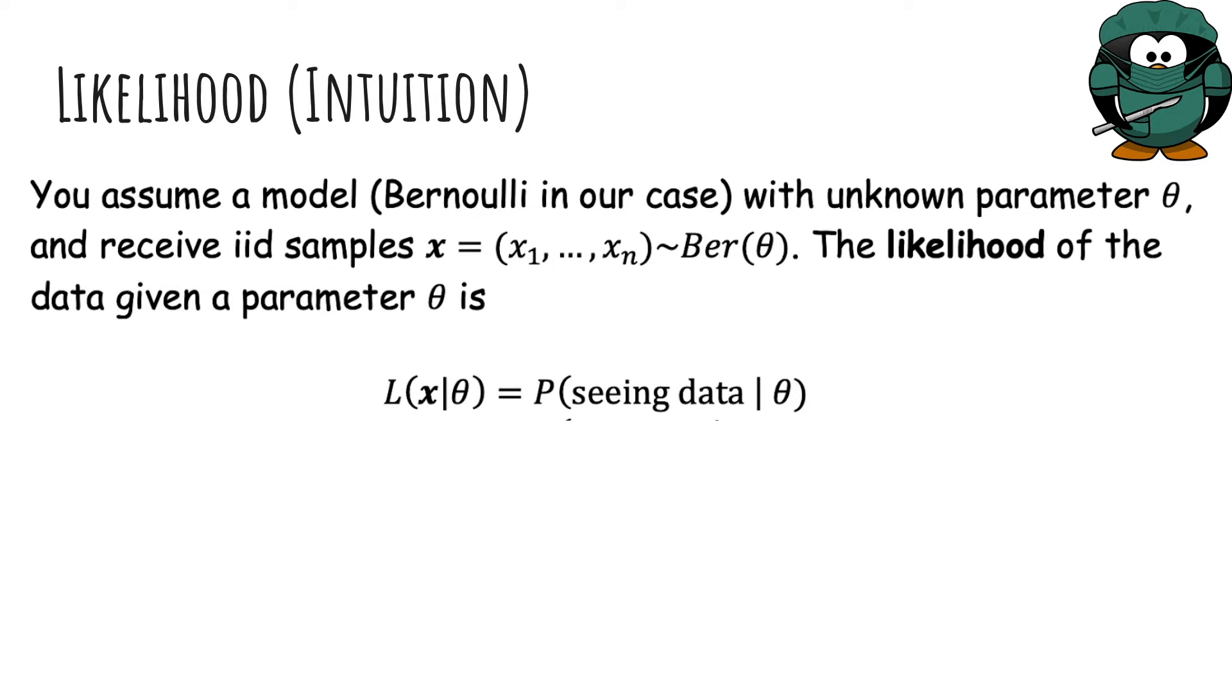So the likelihood of the data. We're assuming a model, for our example Bernoulli because it's just coin flips, with unknown parameter theta. And we receive IID samples x1 through xn from this distribution. That means each of these samples are either 0 or 1, or heads or tails.